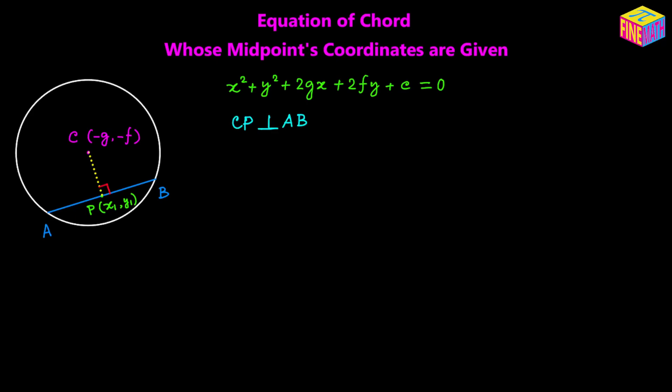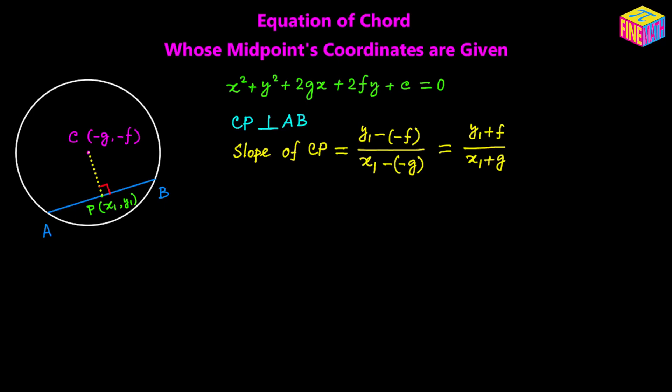Our ultimate goal is to find the equation of the chord AB. Because CP is perpendicular to AB and we know the coordinates of C and P, we can easily find the slope of CP. The slope of CP will be y sub 1 minus negative f over x sub 1 minus negative g, which simplifies to y sub 1 plus f over x sub 1 plus g.